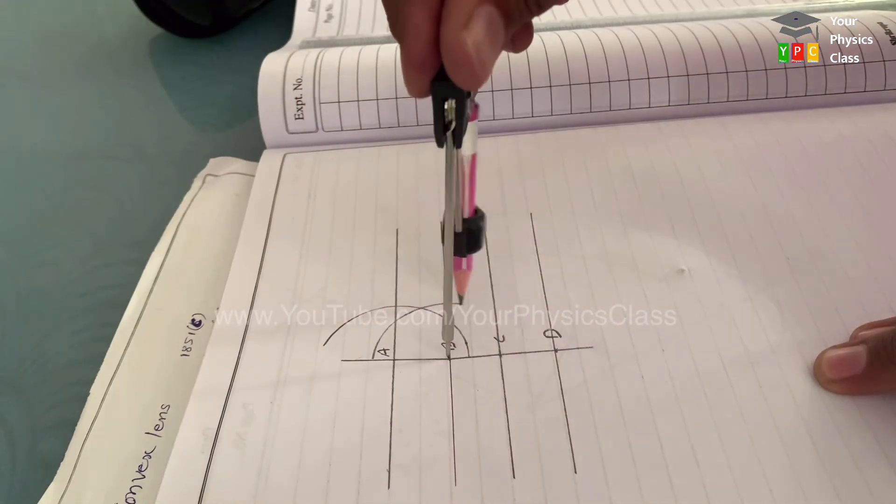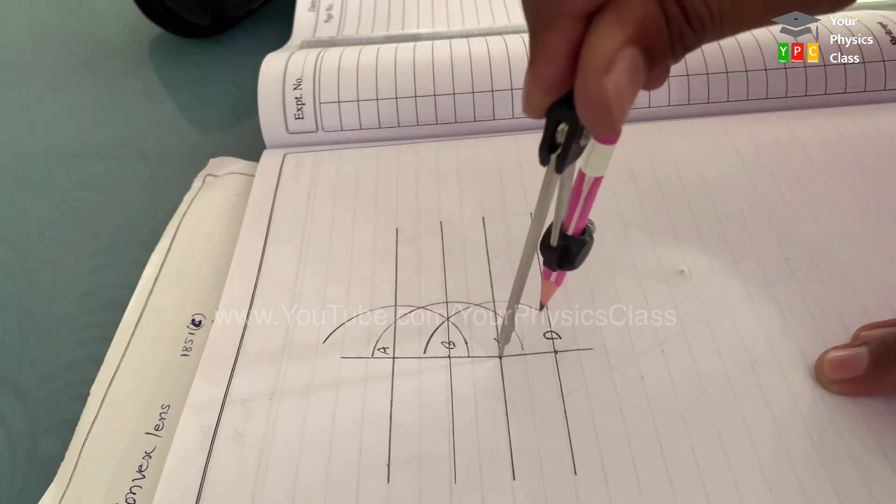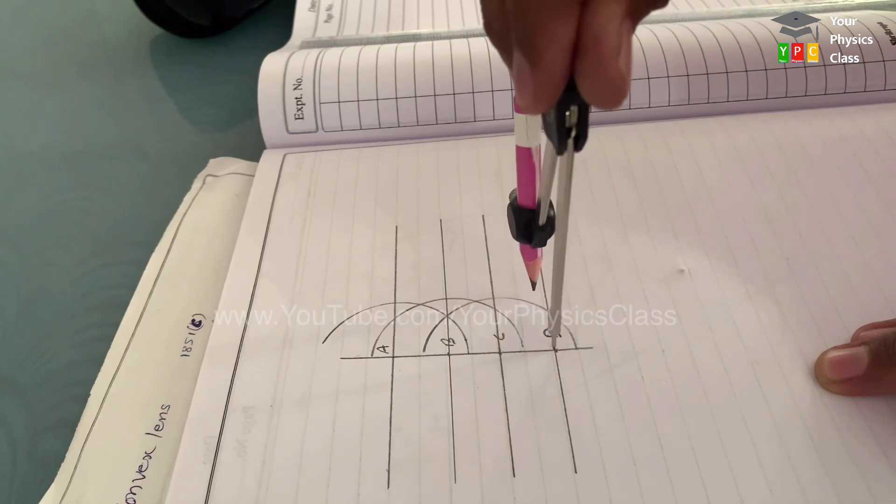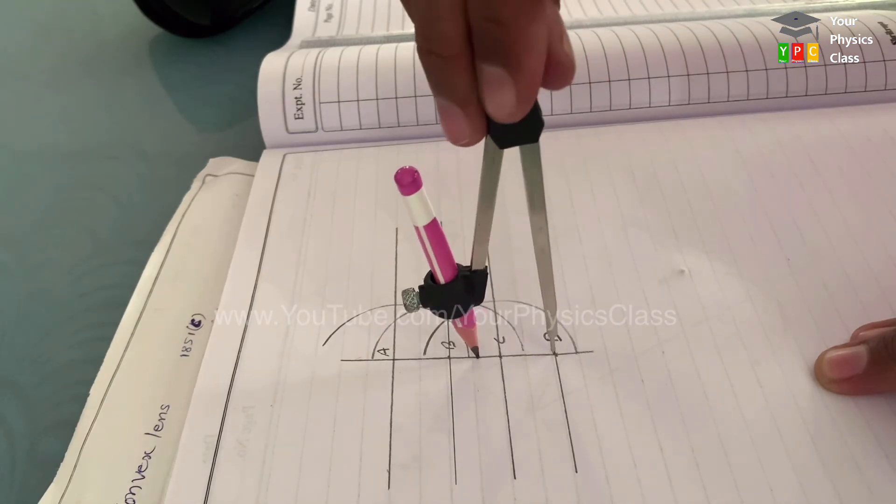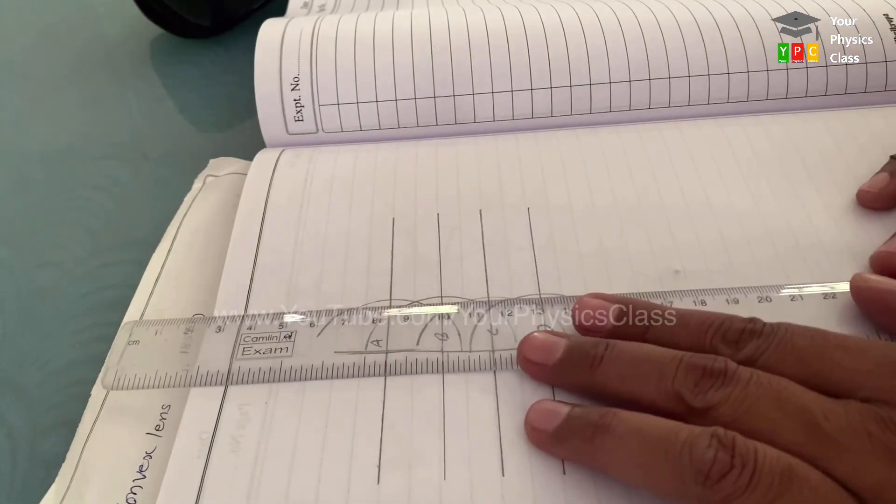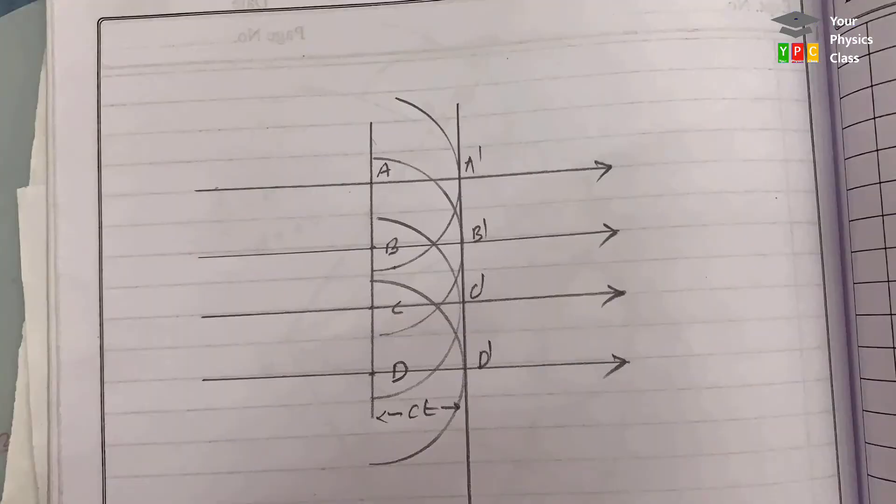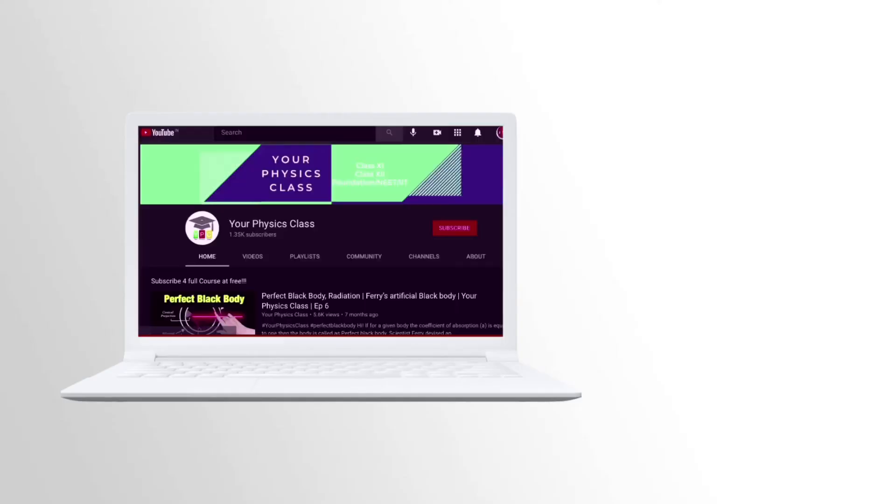And emit light in forward direction. Hence, draw semi-circles of radius ct which is suitably small, approximately 2 cm, with centers a, b, c, and d. Now with the help of scale, draw a common tangent to these semi-circles. This is new plane wavefront.